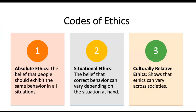When talking about ethics, there are three types of codes of ethics. The first is absolute ethics. The second is situational ethics. The third is culturally relative ethics. Absolute ethics, just like the name suggests, is the belief that people should exhibit the same behavior in all situations.